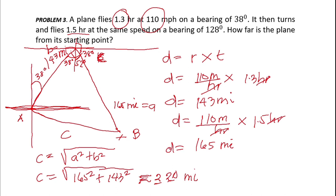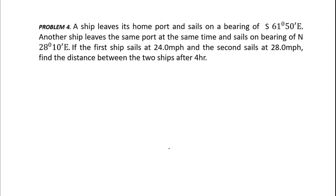We have problem number four. A ship leaves its home port and sails on a bearing of south 61 degrees 50 minutes east. Another ship leaves the same port at the same time and sails on a bearing of north 28 degrees 10 minutes east. The first ship sails at 24 miles per hour and the second at 28.0 miles per hour. Find the distance between the two ships after four hours.